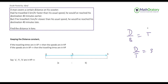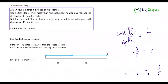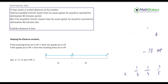An HP series is basically where the numerator is kept constant and the denominator is in AP. So if the distance is kept constant and the speeds are in AP, then the times are in HP, and vice versa. If the distance is constant and the time is in AP, then the speed is in HP.